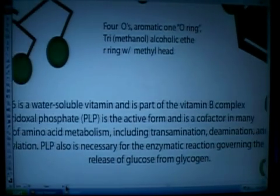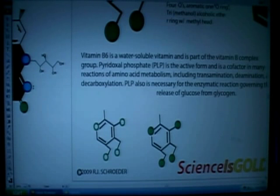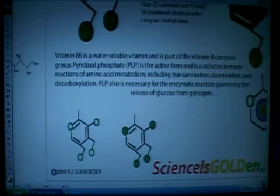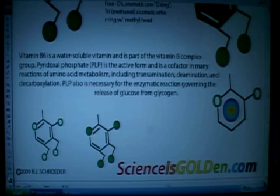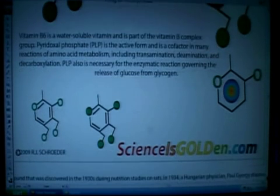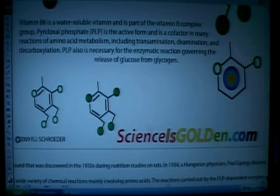It says that vitamin B6 is a water-soluble vitamin, part of the B-complex. Pyridoxal phosphate is the active form and is a cofactor in many reactions of amino acid metabolism. So if you're going to have any kind of amino acid, which is building muscle, building neurotransmitters from amino acid, that kind of metabolism, which is transamination, deamination, and decarboxylation.